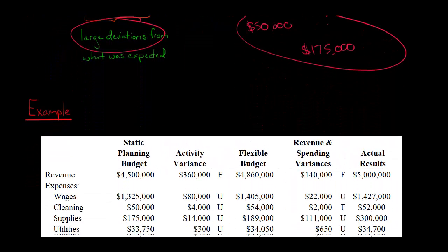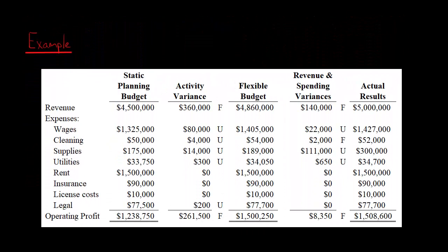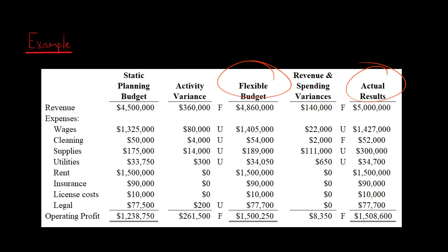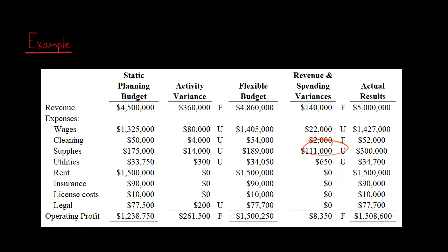I've got some other videos on variance analysis — I'll just go over the basics here. We've got our original planning budget, and then we adjust that to get our flexible budget based on the actual activity level, and then we compare the flexible budget to the company's actual results. Let's say this is a hospital. We've got these figures here showing revenue and spending variances, and our largest variance is $111,000 unfavorable cost variance for supplies.